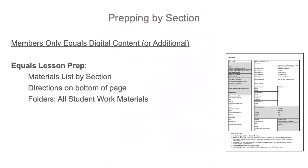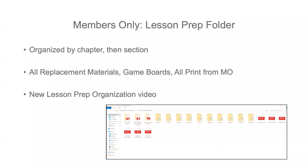The third and final step in the process is gathering and printing the materials for instruction. This information is organized on the materials list by section document. You will find these documents within the lesson prep folder in your members-only content. As you dive into that folder, you will find the content is organized by chapter, then by individual section. This supports you with quickly printing the materials you'll need for that entire section. There are also three additional folders: all replacement materials, which has printable versions of your cards, posters, and workmats — anything you might need to replace from the content kit — and a folder for game boards, necessary when playing a game found on the first or fourth page.